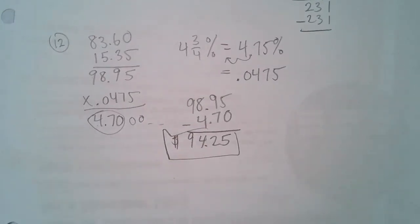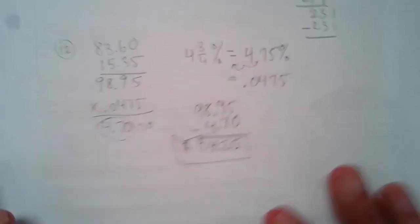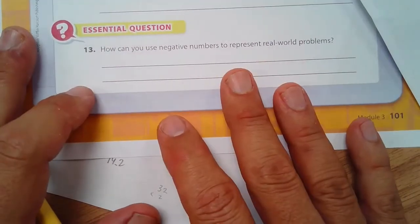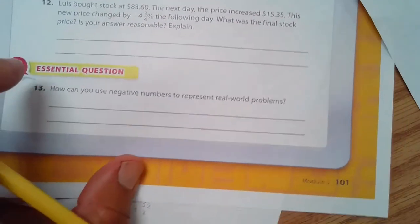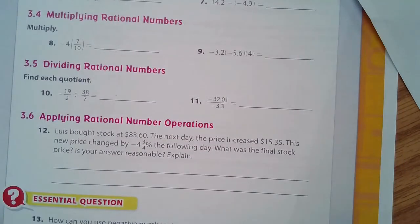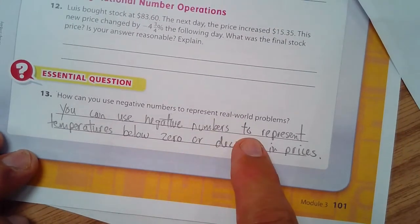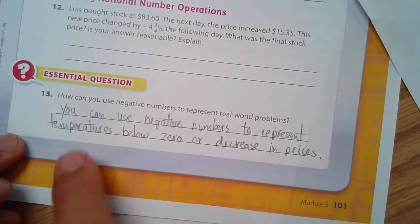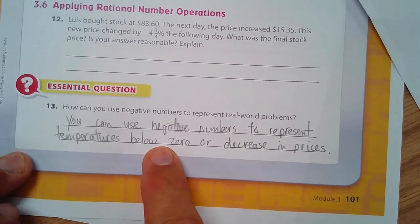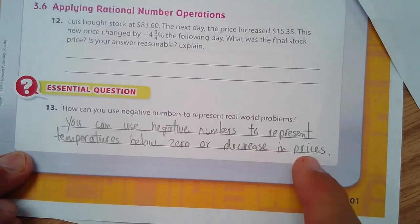How can you use negative numbers to represent real world situations? Well, you can use negative numbers to represent temperatures below zero. There's one way. Or a decrease in prices of something. And that's what you've got to know.